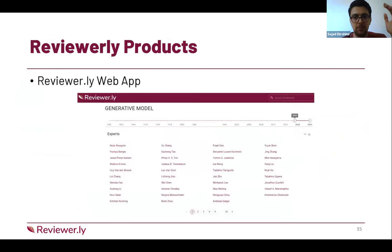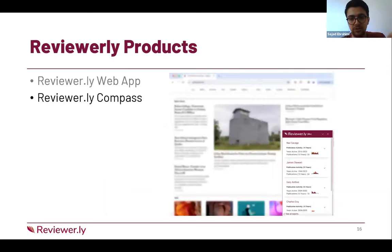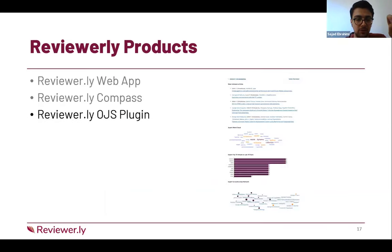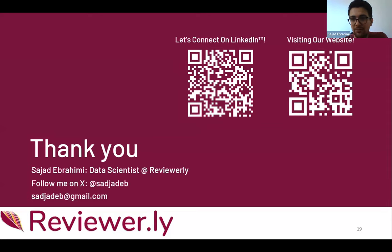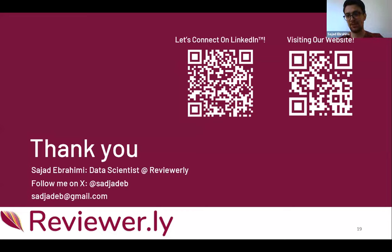These are some products from our team. The most well-known is our web application where you can create a pool of authors and submissions and get reviewer suggestions for papers submitted to your conference. We also have a browser plugin that lets you select text and find related papers, an OJS plugin, and an API you can use directly in your code to get reviewer and paper suggestions. Thank you everyone for your attention — feel free to ask any questions, and you can connect with us or find me on X or by email.